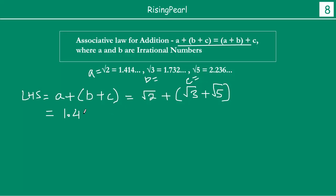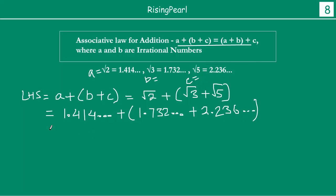This means square root 2 is 1.414... plus square root 3 is 1.732... plus square root 5 is 2.236... So if you add square root 2 and square root 3 first, you will get something like 3.968, and then if you add square root 5, you will get 5.382.